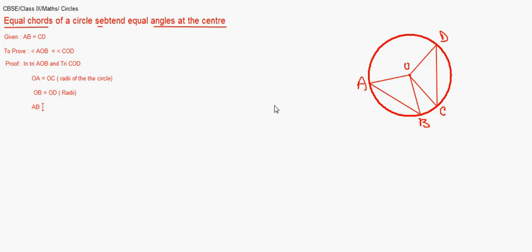Now, it also says, AB is equal to CD. It was given to us, so by SSS congruency, these two triangles, triangle AOB will be equal to triangle COD.